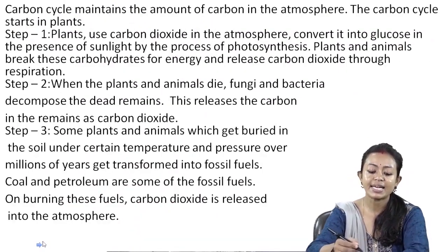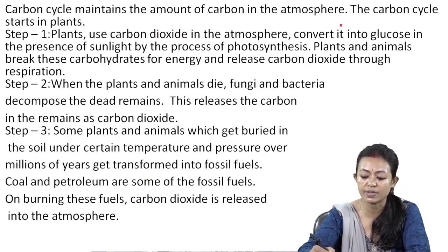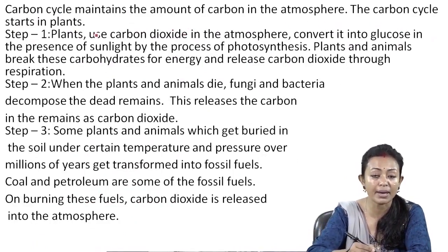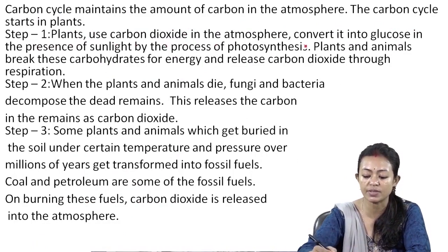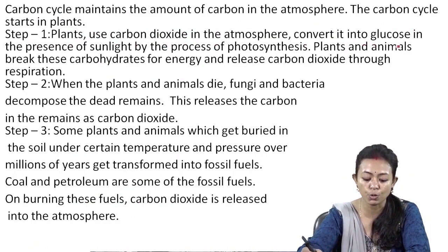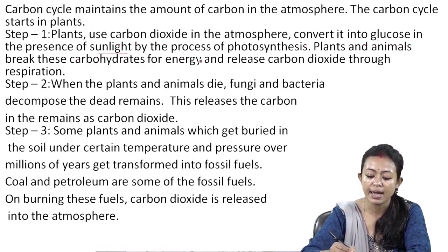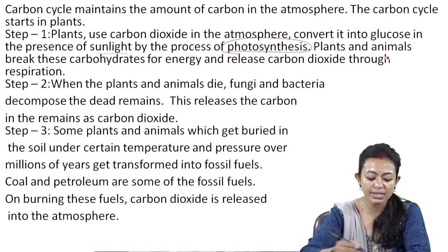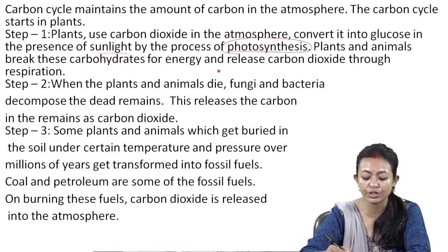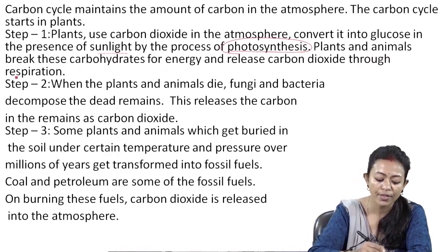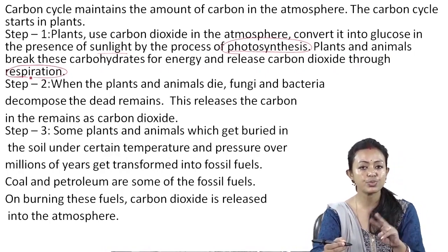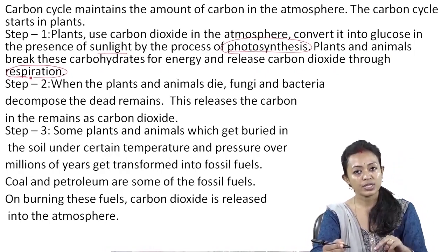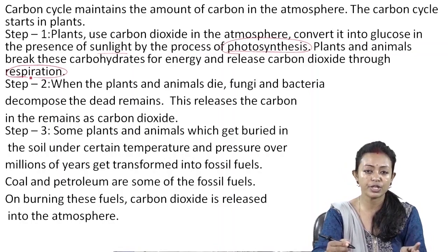The carbon cycle maintains the amount of carbon in the atmosphere. The carbon cycle starts in plants. Step 1: Plants use carbon dioxide in the atmosphere and convert it into glucose in the presence of sunlight by the process of photosynthesis. Plants and animals break these carbohydrates for energy and release carbon dioxide through respiration. These two processes — photosynthesis and respiration — are responsible for maintaining the balance.